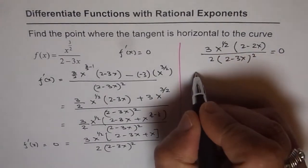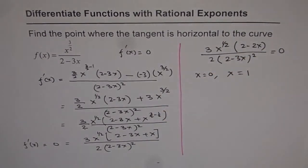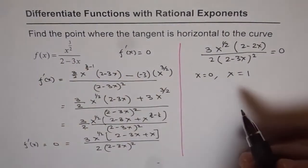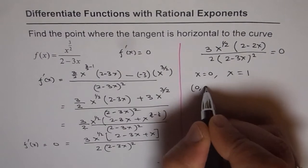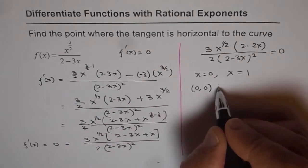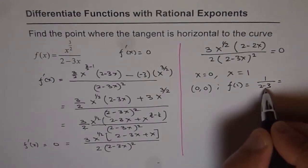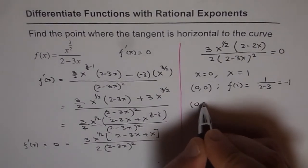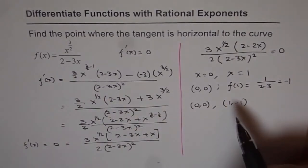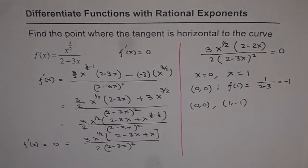Setting the numerator to zero gives x equals 0 or x equals 1. These are the two points where the tangent will be horizontal. Plugging in 0 gives the point (0, 0). Plugging in 1 gives f of 1 equals 1 over 2 minus 3, which is minus 1, giving the point (1, minus 1). So (0, 0) and (1, minus 1) are the two points where the tangent is horizontal to the curve.